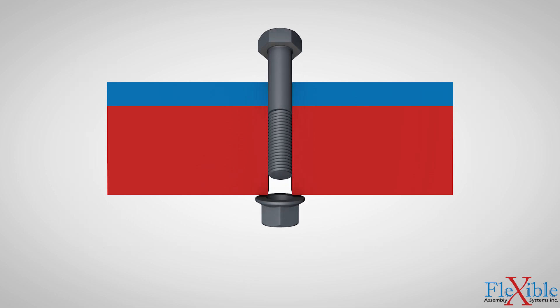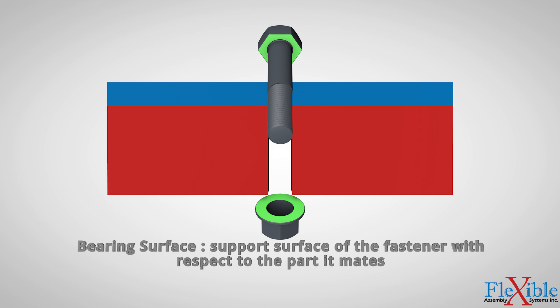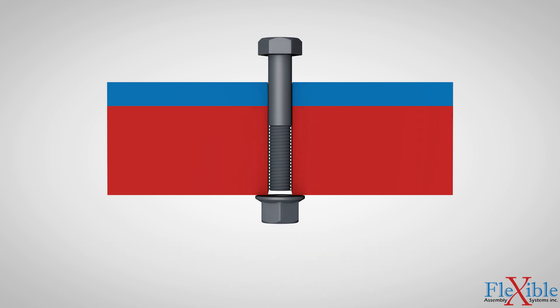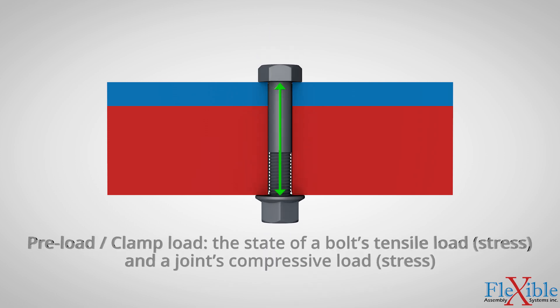The support surface on the fastener which mates to the part that it will be clamping is called the bearing surface. Preload is the state of a bolt's tensile load, its capacity for being able to withstand being pulled apart, while clamp load is the state of a joint's compressive load, its capacity to withstand loads while being pushed together.